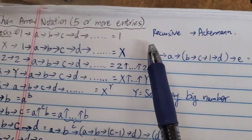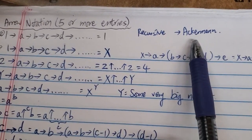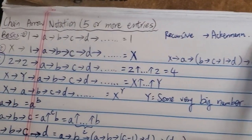And again, the chain arrow notation is a recursive function, very recursive, similar to the Ackerman function, but on steroids.